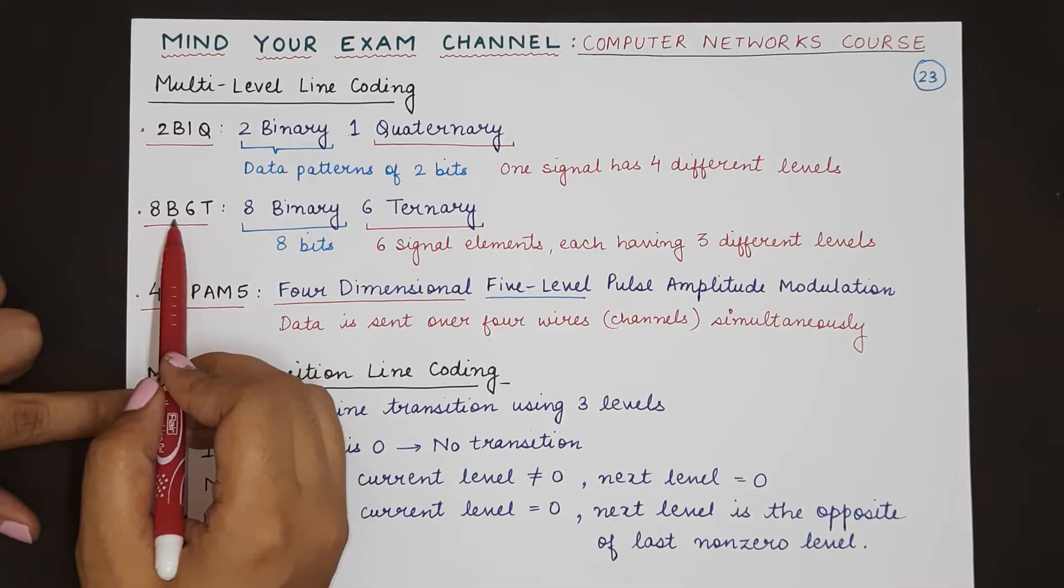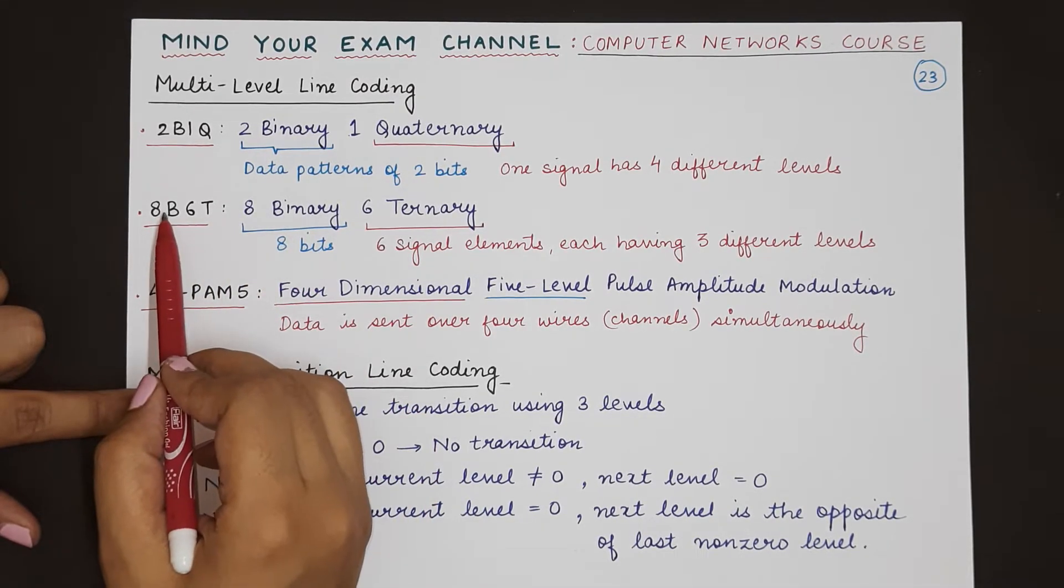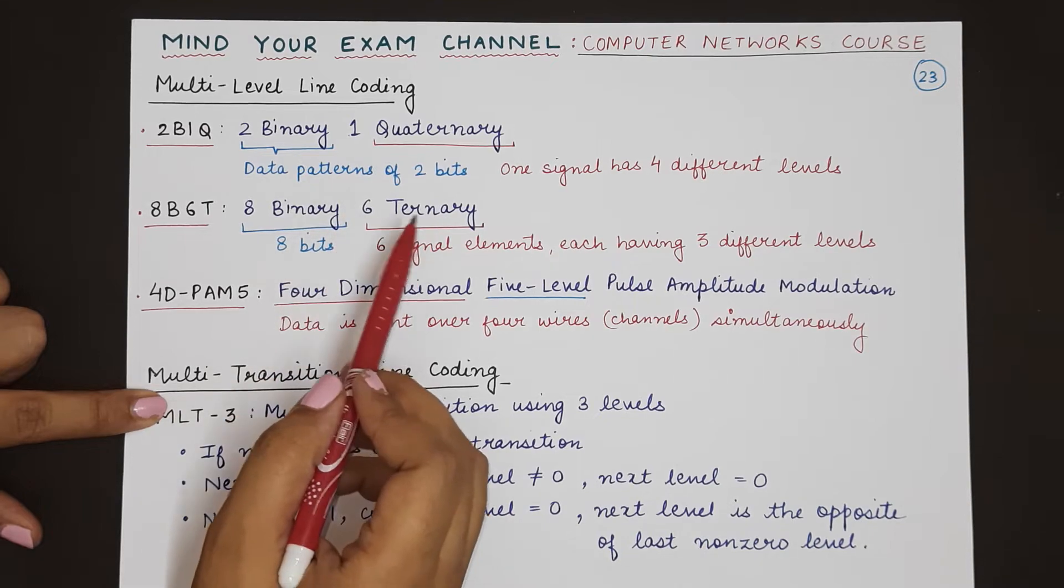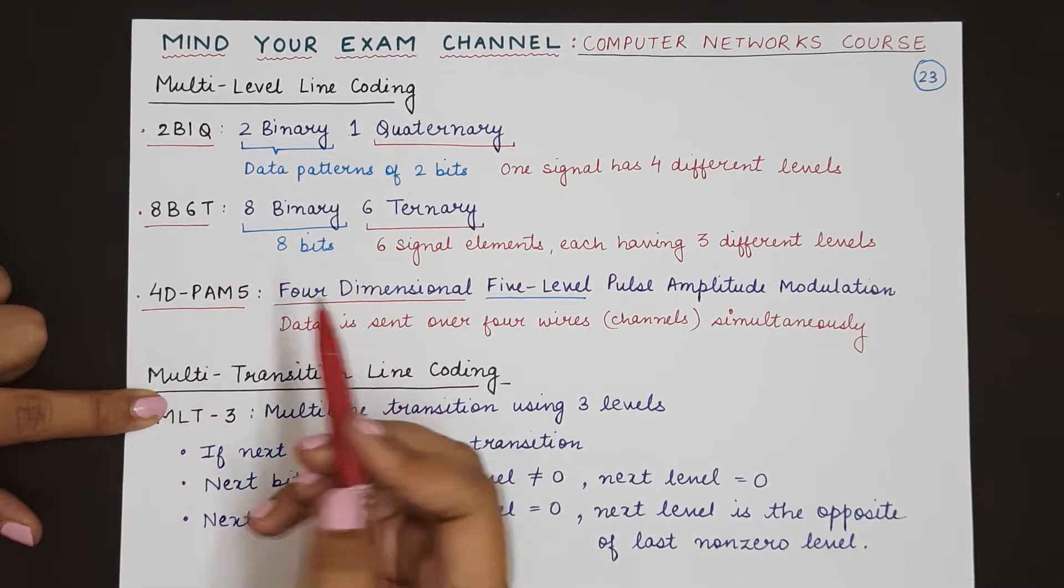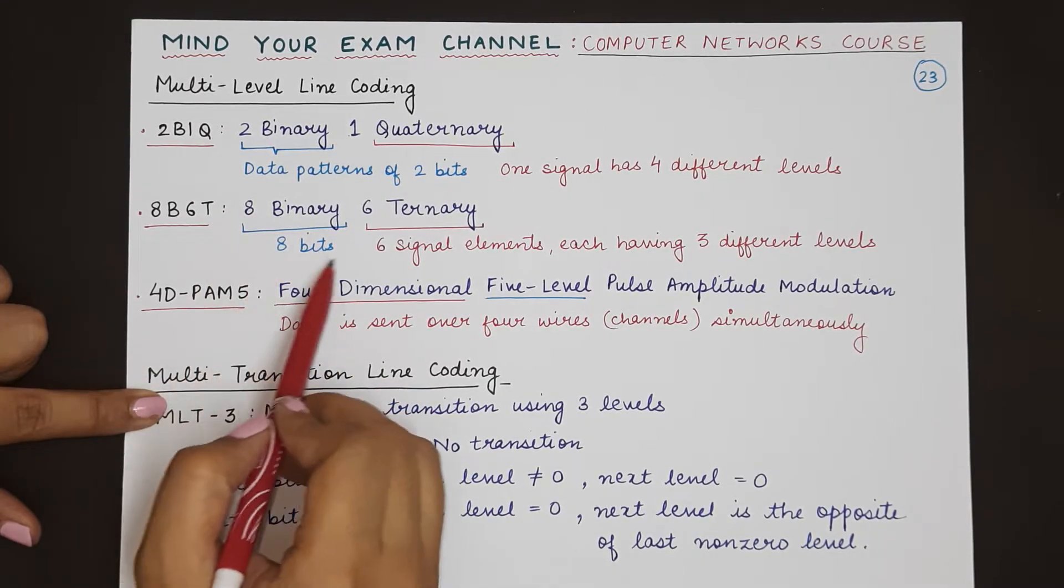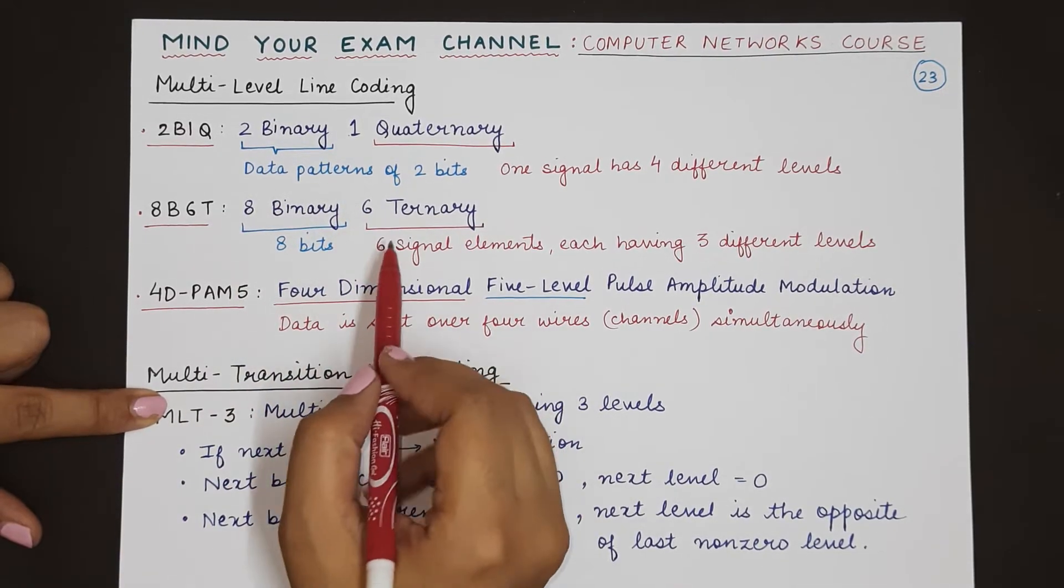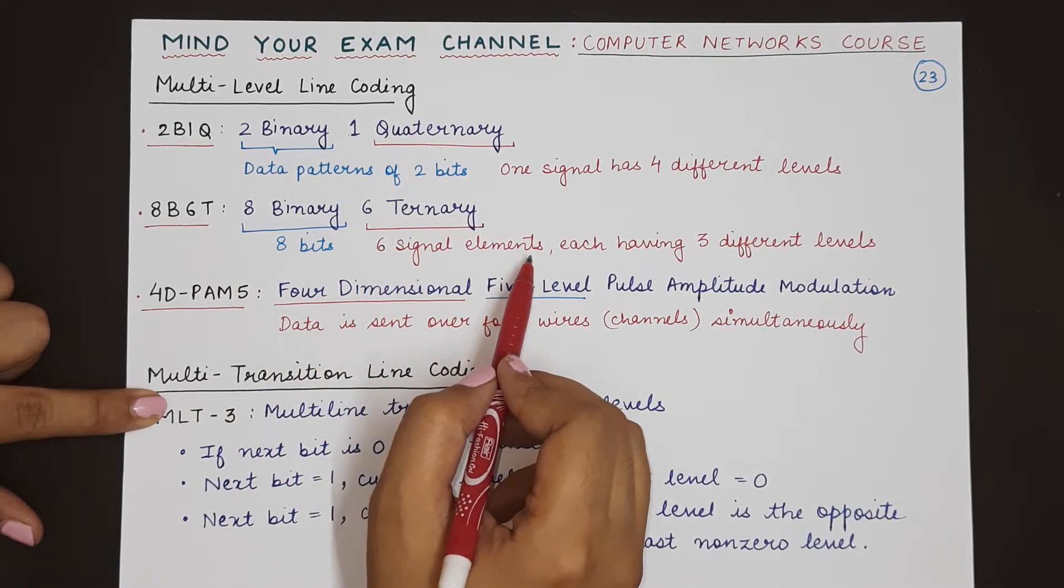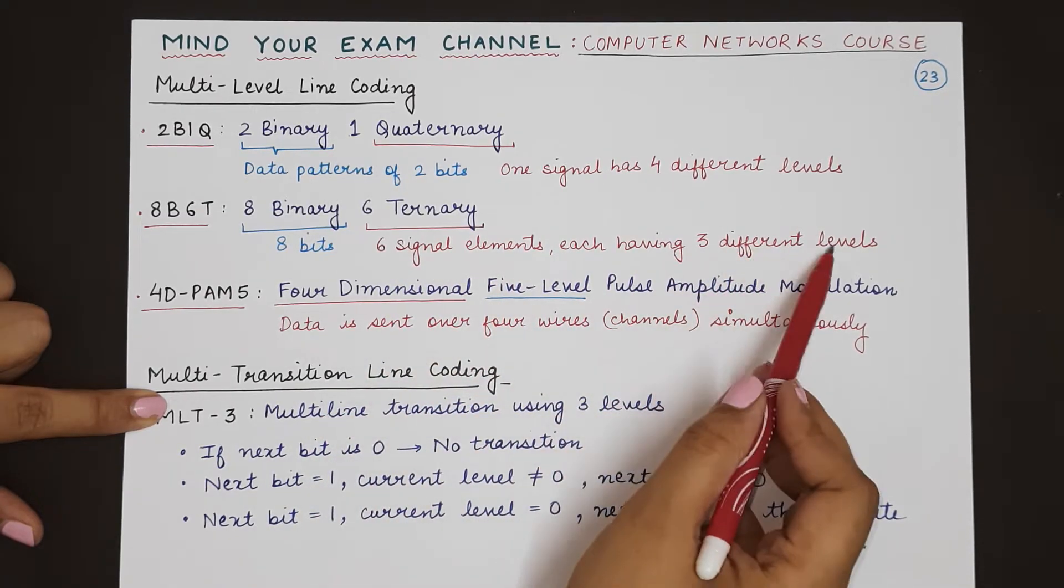8B6T means 8 binary—capital B will always stand for binary, that means binary numbers which are bits, 0s and 1s. So 8 binary means there will be 8 bits which will be encoded using 6 signal elements, and each signal element will have three different levels.